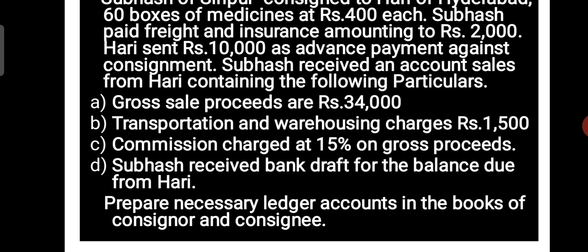So here we are asked to prepare only ledger accounts — in the Books of Consigner and Consignee. What are the necessary accounts? In the Books of Consigner, the necessary accounts are three: one is Consignment Account, second is Consignee Account, and third is Goods Sent on Consignment Account. These three are the important accounts to prepare in the Books of Consigner. In the Books of Consignee, we have to prepare only one account, that is Consigner Account. Now we have to make working notes from the problem.